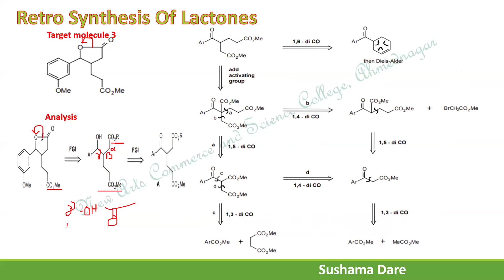Whenever a 1,6-dicarbonyl compound is present, you first go with an FGI: convert the OH to a carbonyl group. After FGI, we have a 1,6-dicarbonyl compound. For a 1,6-dicarbonyl compound, we apply a retro-ozonolysis strategy, which gives the cyclic alkene intermediate.